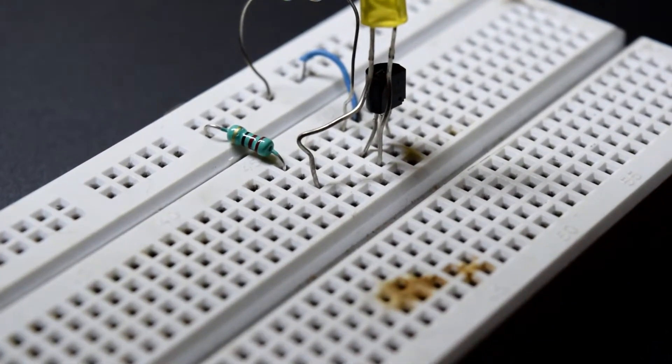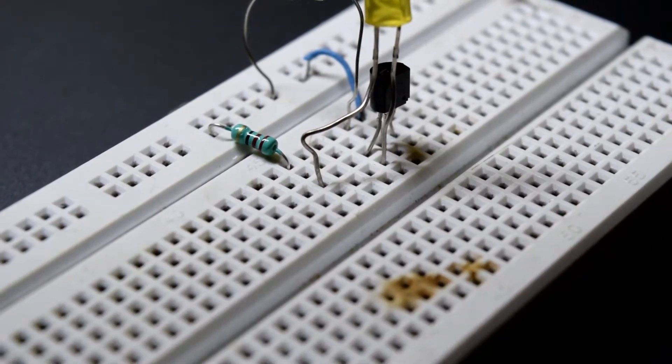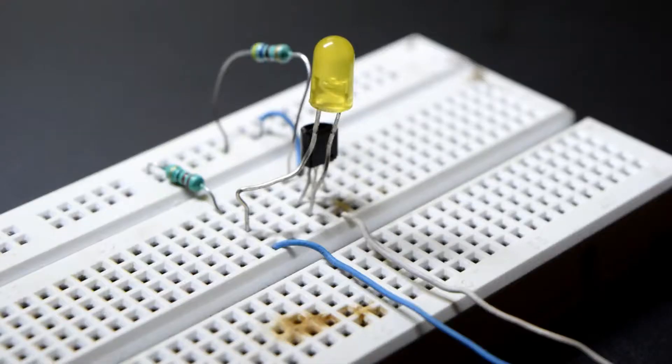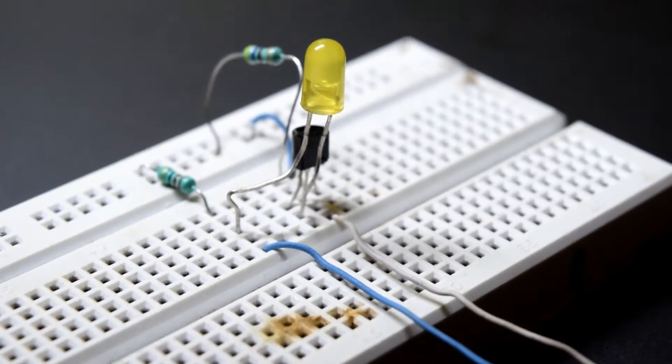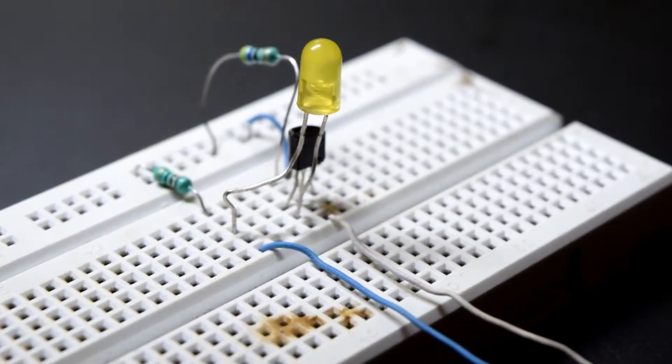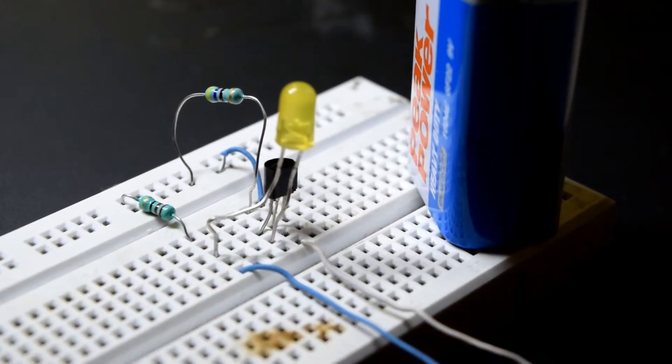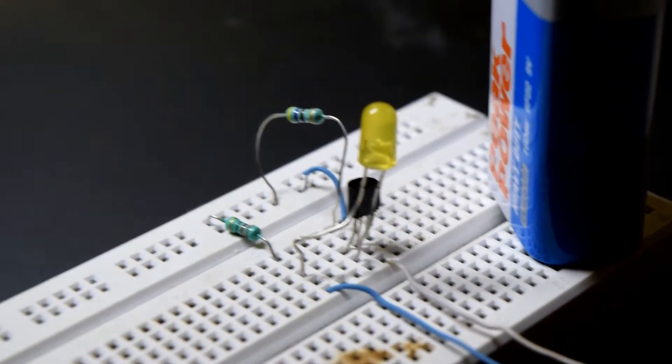Now connect two wires: one to the base of the transistor and the other to the positive terminal of the LED. Give the power supply and the circuit will be ready.